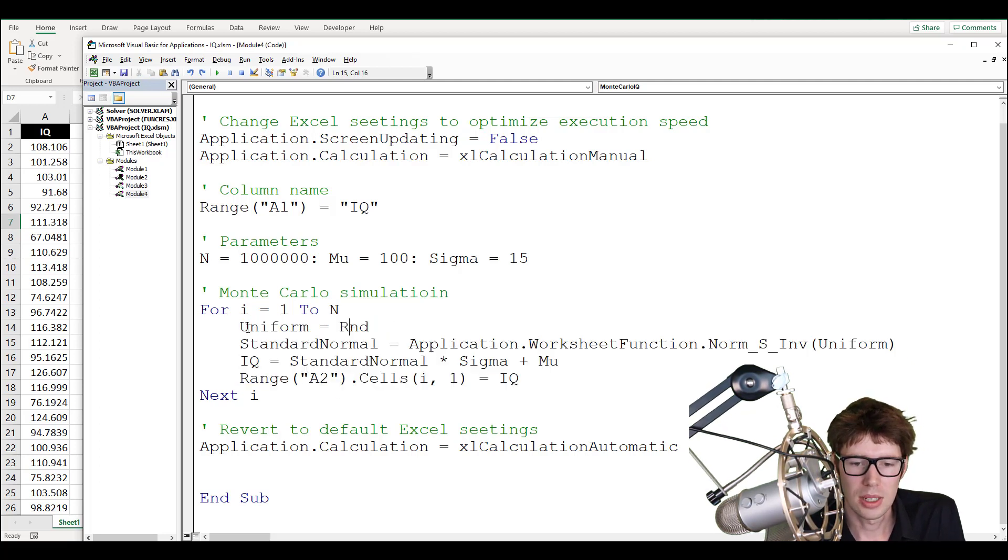So the first thing I do is to make a variable named uniform, and I could actually just call it whatever, could call it sabaka, for instance, if I wanted. And it's just RND, which is the VBA version of the pseudo random number generator, which may or may not be the Wichmann Hill algorithm. So this function here, RND, will generate a number between zero and one with uniform probability.